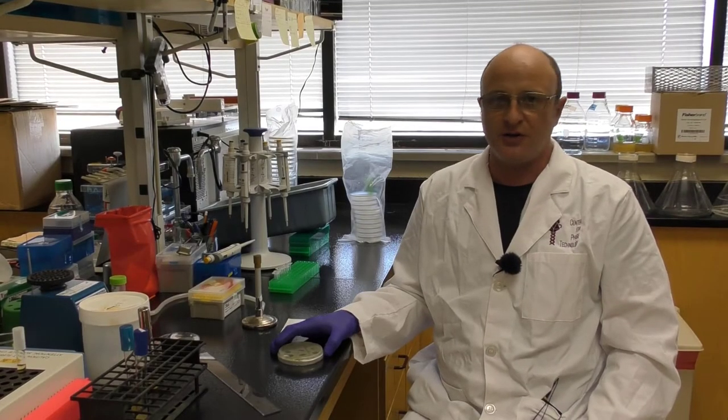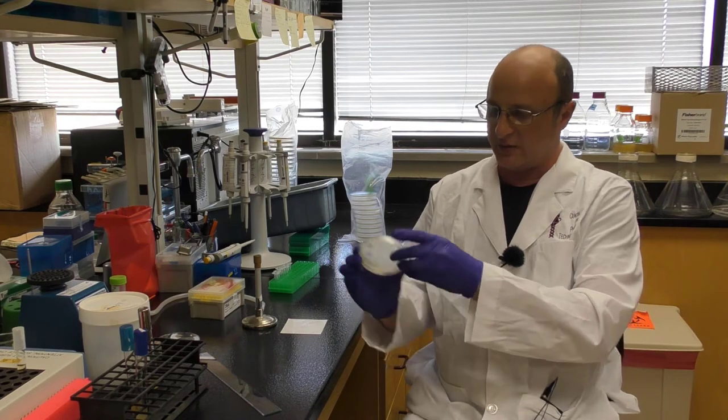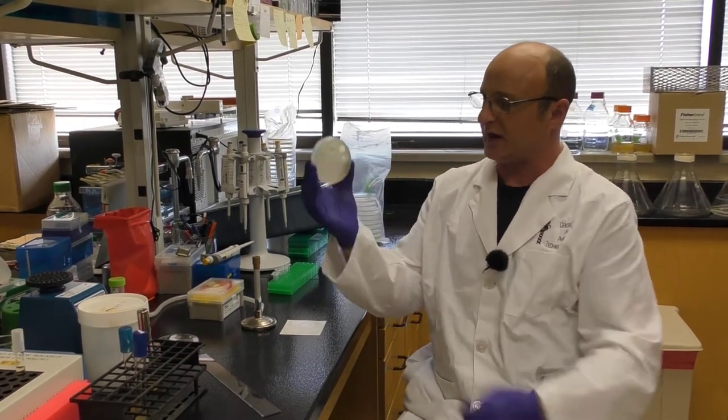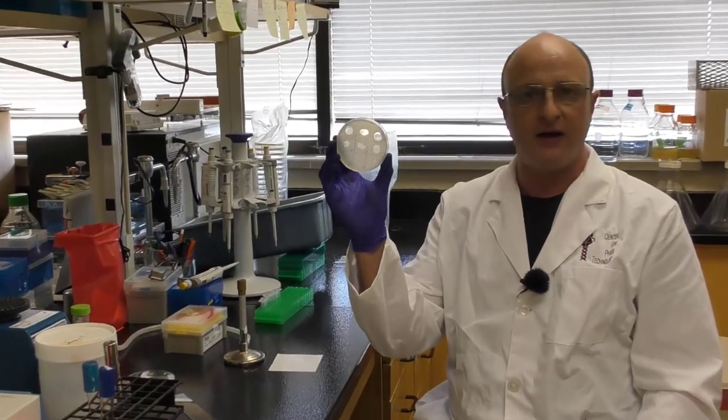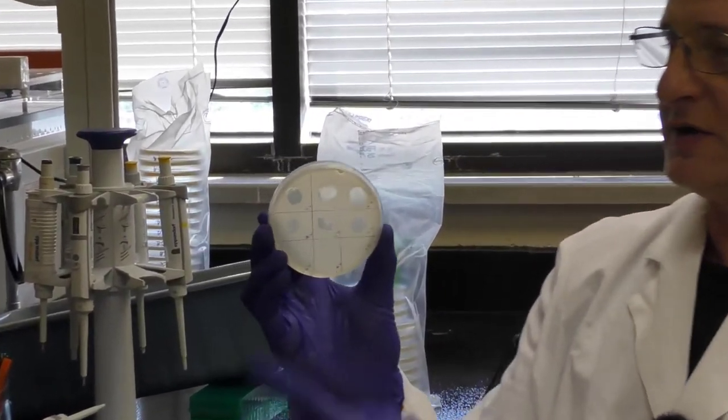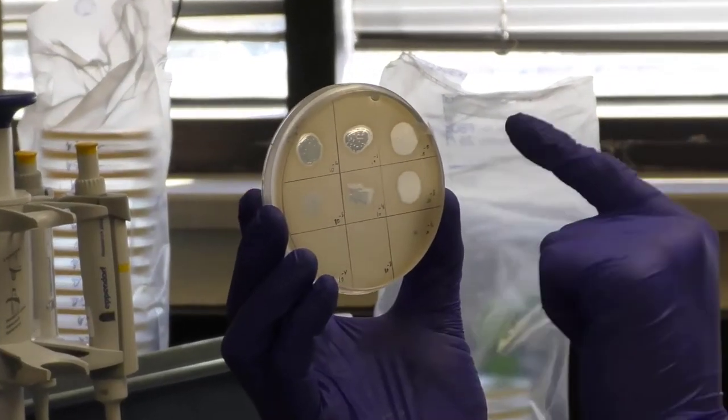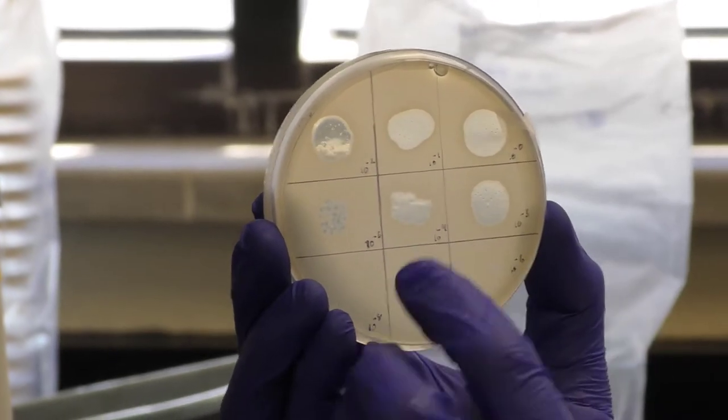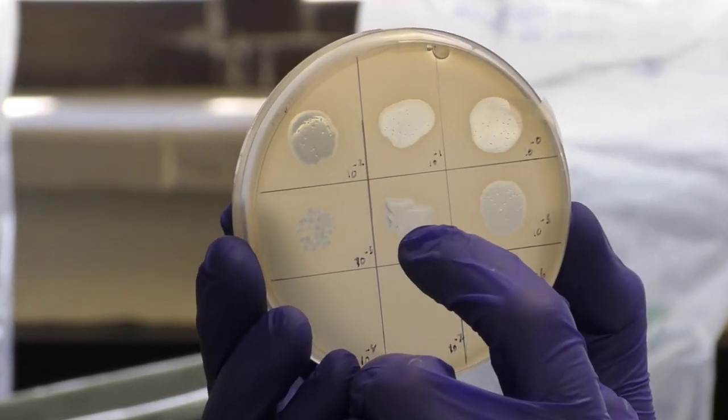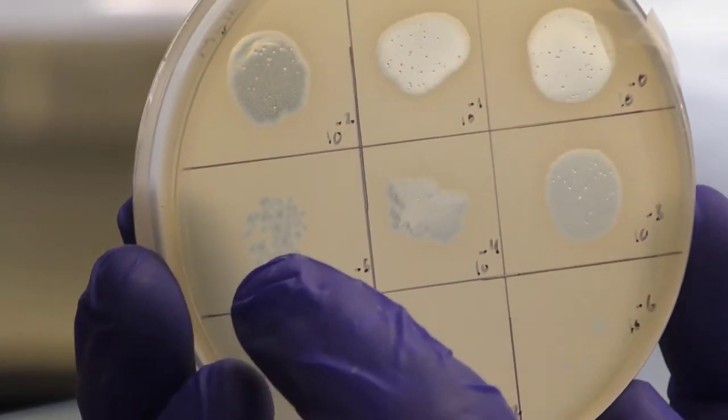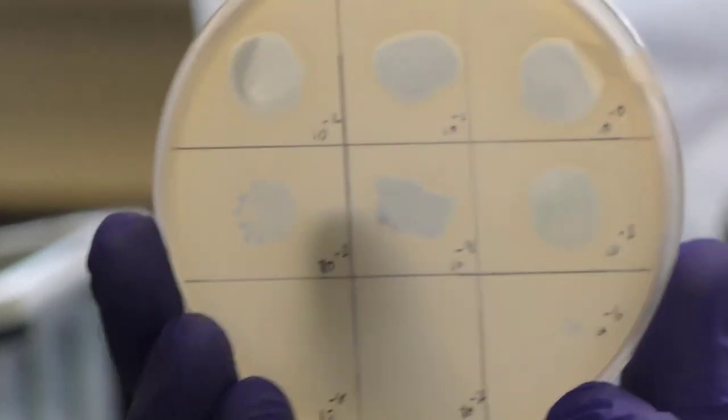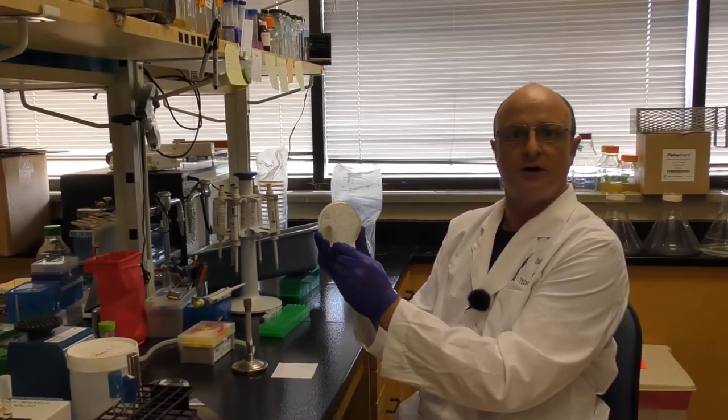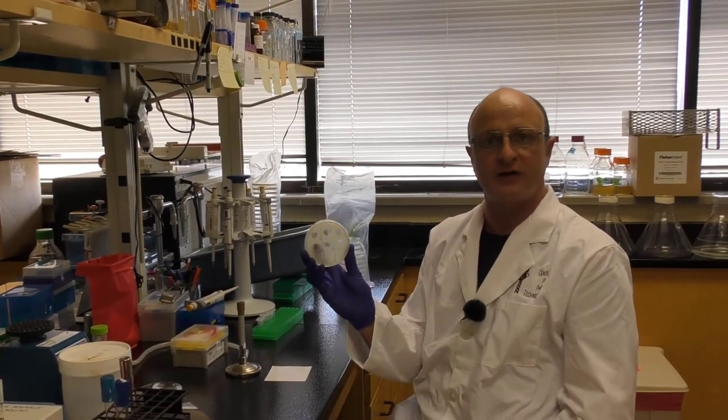So after incubation, what you should hopefully end up with is something like this. What we have here is our serial dilutions running in this direction. Confluent, confluent lysis. You can start seeing we're getting to the point of individual plaques, but these are still uncountable. And here in the minus six dilution, we have nice separate countable plaques. And also we have no other spots in our other dilutions, so we know our buffer is clear and our data are good.